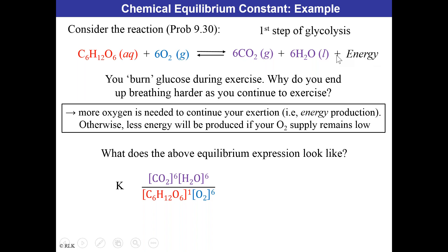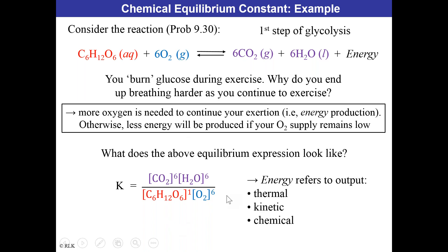The equilibrium expression for glucose combustion: K = [CO2]⁶[H2O]⁶ / ([glucose][O2]⁶). Carbon dioxide is raised to the 6th power (6 moles), water molecules to the 6th power, glucose to the 1st, and oxygen to the 6th. Energy (ATP formation) can be included in the numerator if desired, but typically we focus on the molecular species. This is how to construct an equilibrium expression for this reaction.